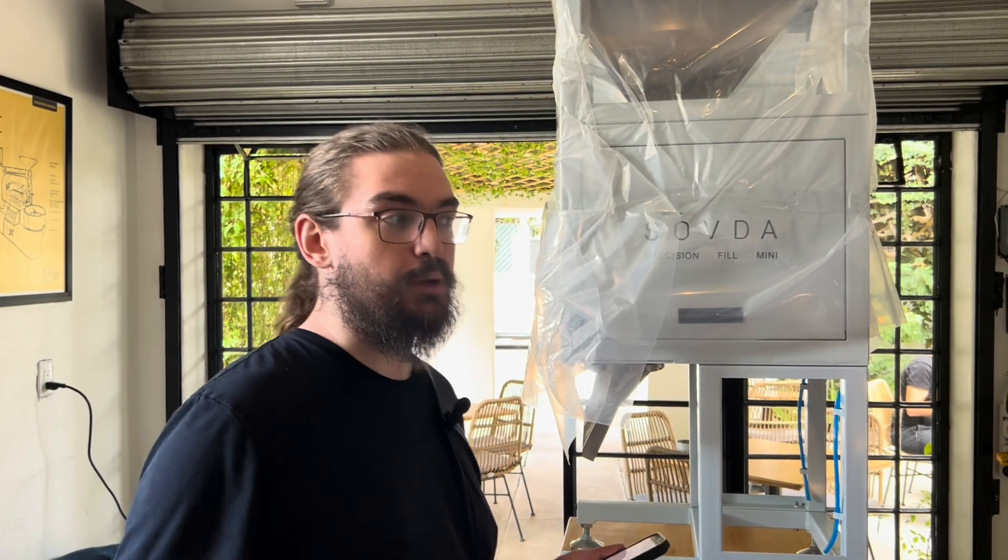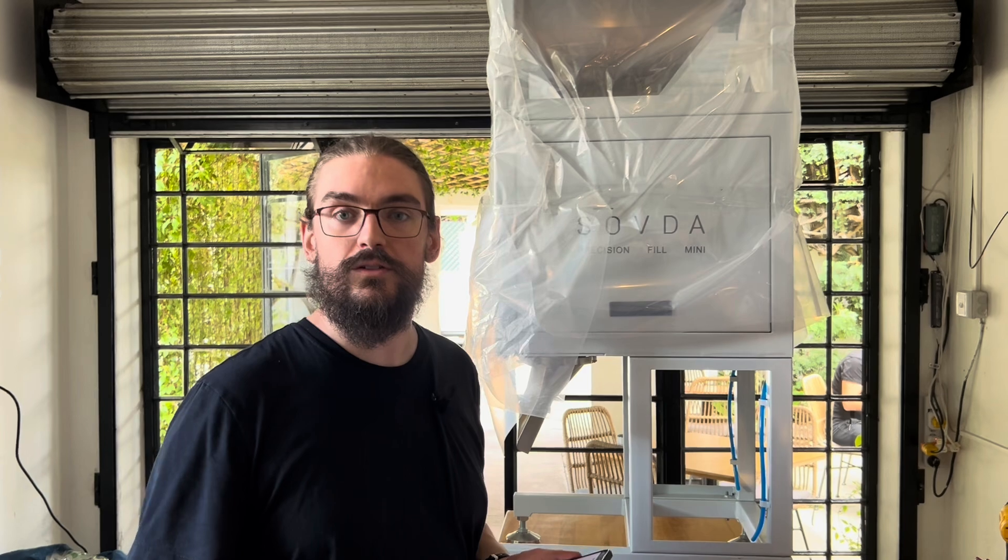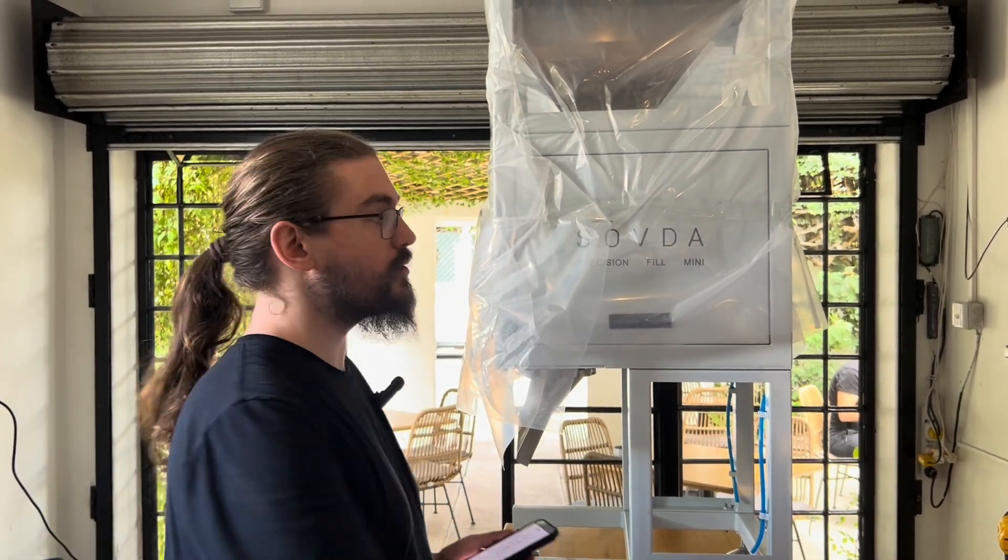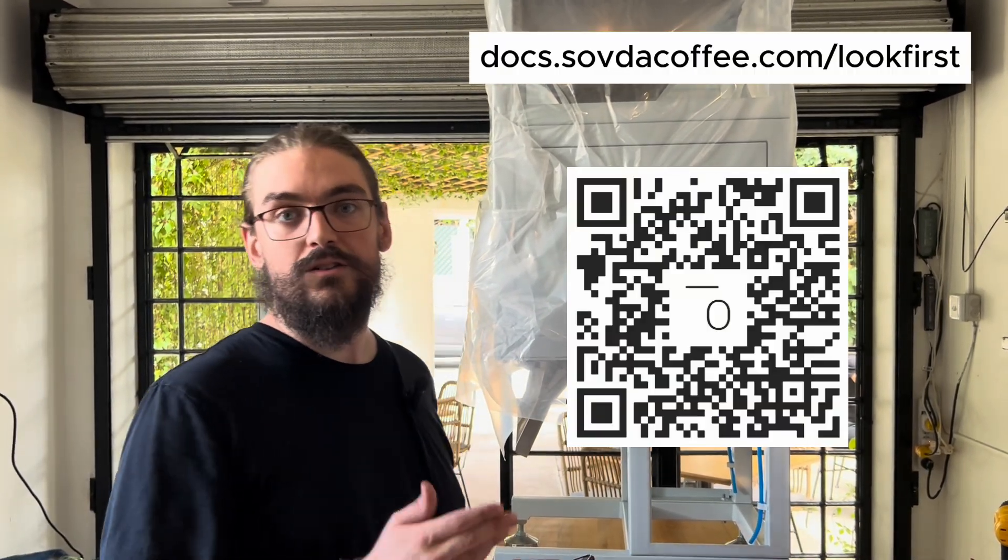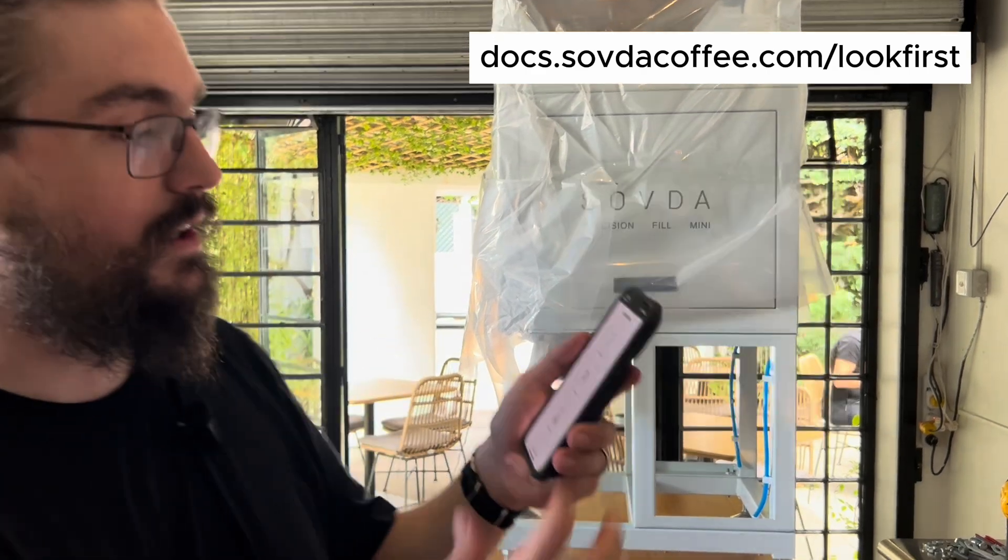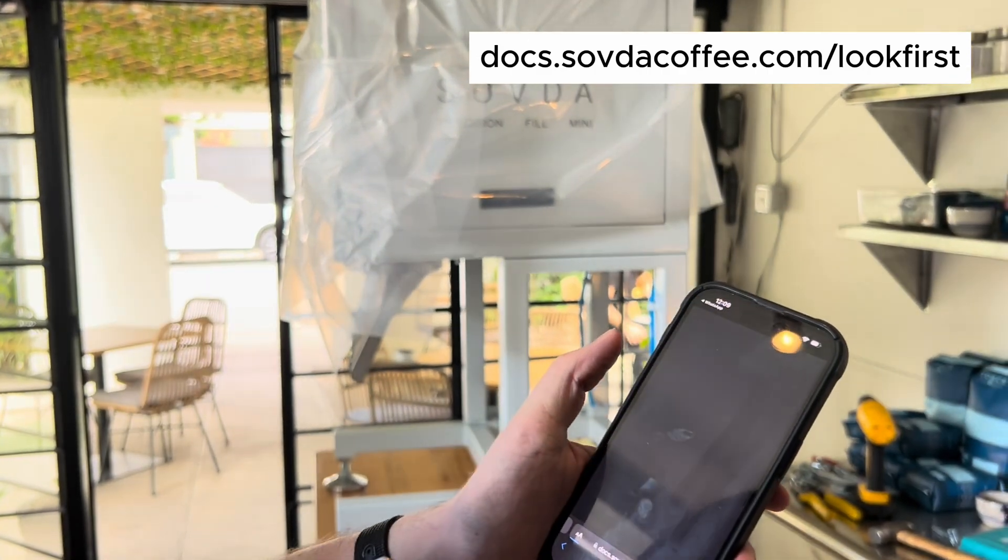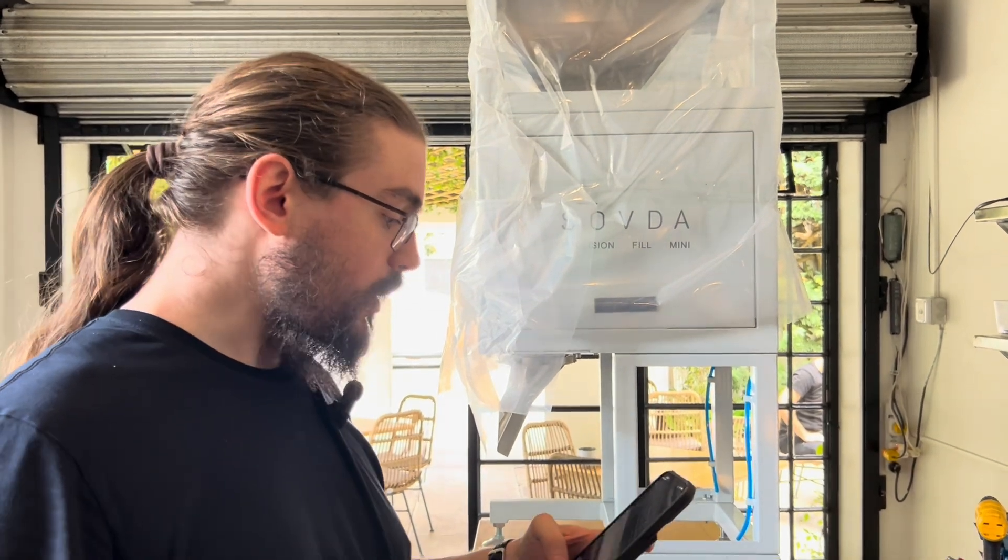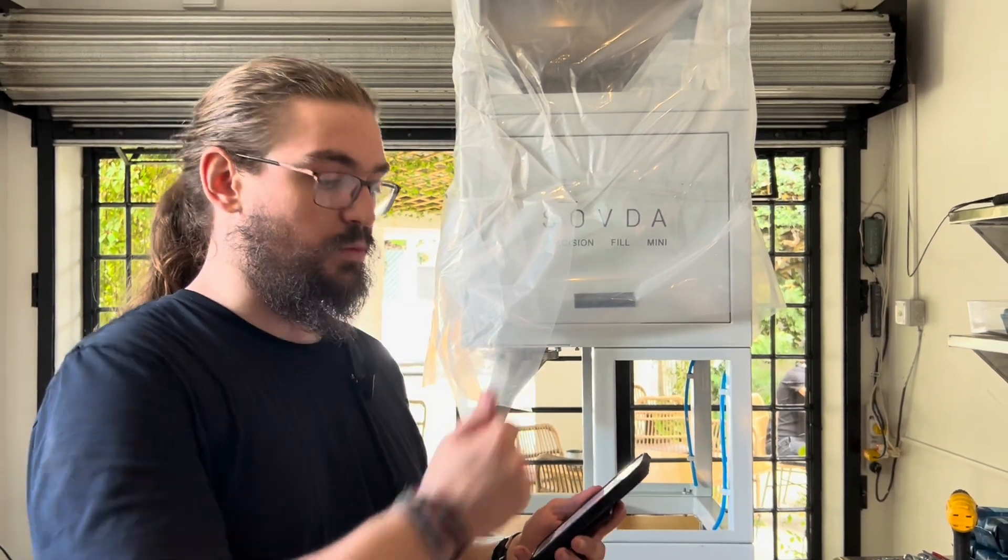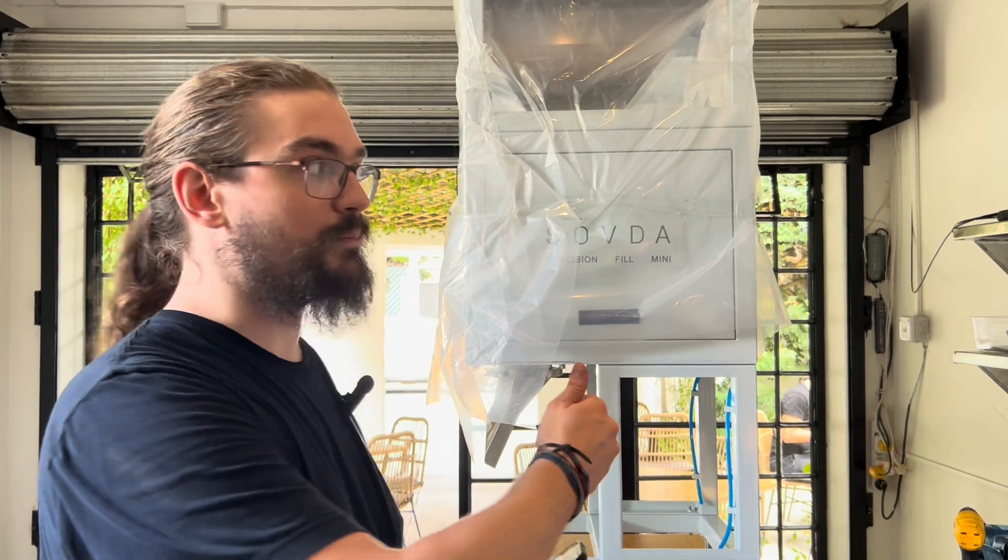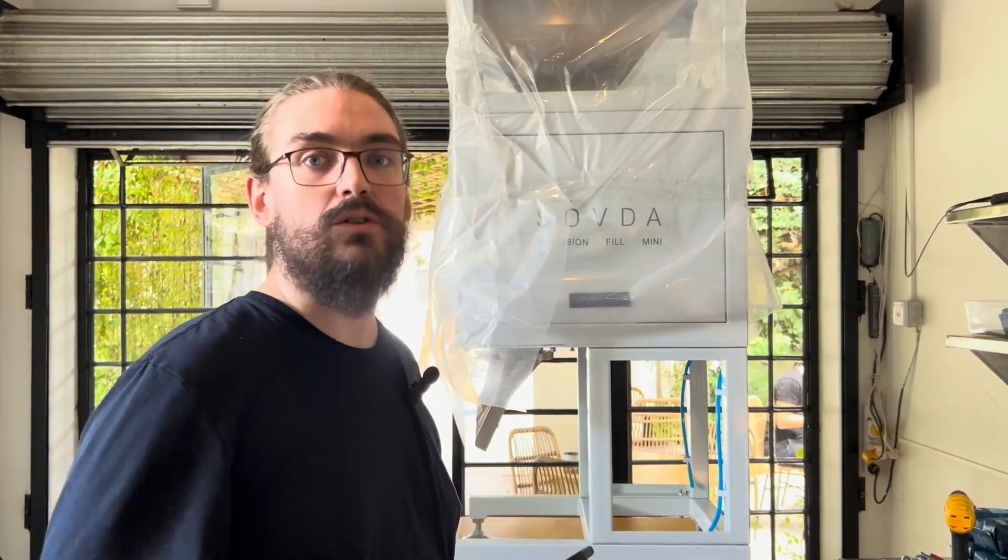At this point, I want to bring up the Precision Fill Mini Quick Start Guide. There's a number of ways you can get this. You should have gotten a to-read-first document emailed to you when you purchased the machine. You can also go to docs.savdacoffee.com/lookfirst, and that will have all of the equipment uncrate and assembly information. Or if you text Savda Service on WhatsApp, you'll get a link right to that lookfirst document automatically. We're going to use that Quick Start Guide to get the machine up and running. I won't reference it in the video, but this video is a companion video to that document.